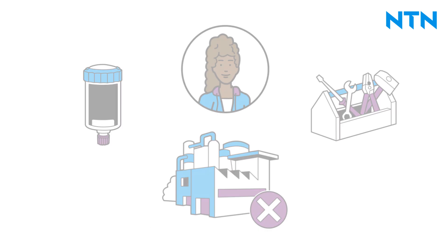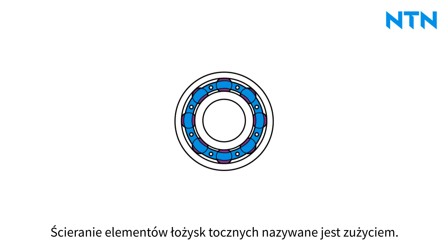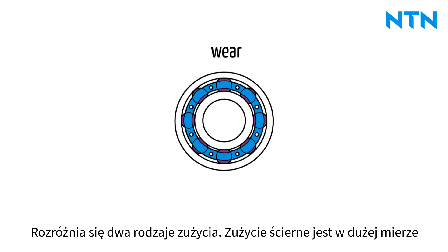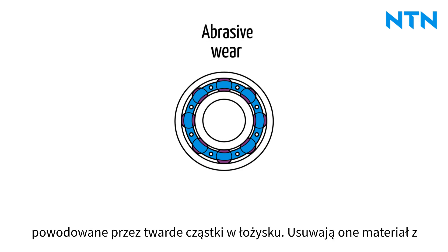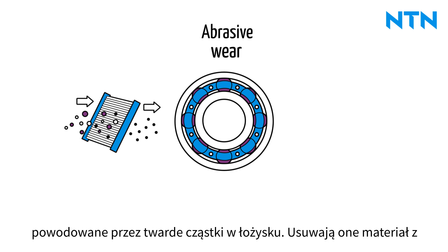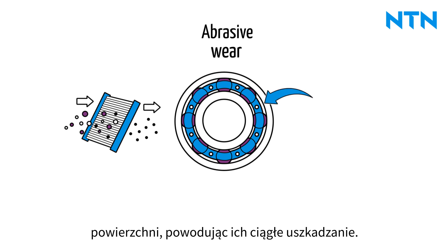When rolling bearing components wear out, this is called wear. A distinction is made between two types of wear. Abrasive wear is largely caused by hard particles in the bearing. These remove material from the surfaces, causing them to be continuously damaged.